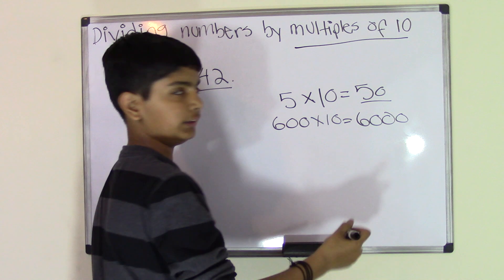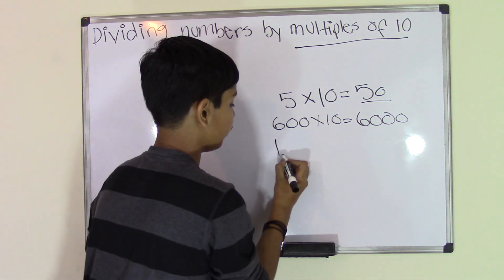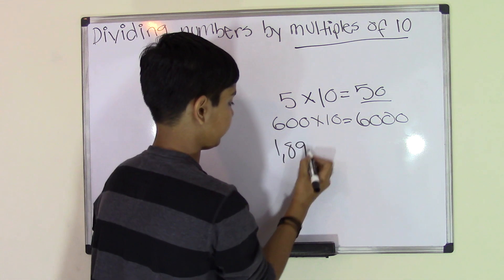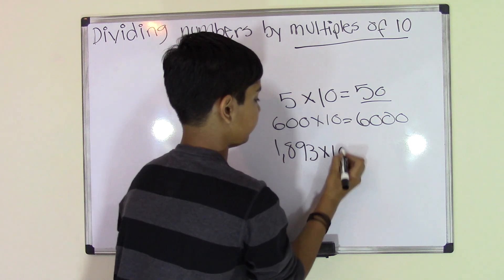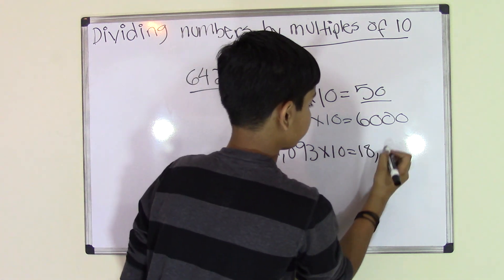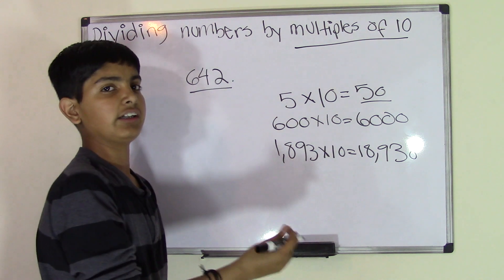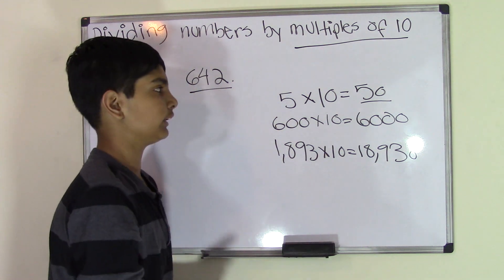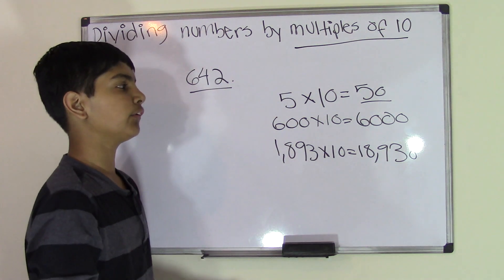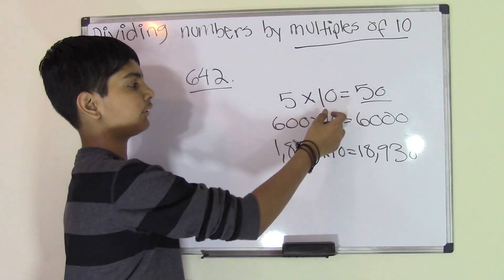We could do 1893 times 10 and get 18,930, and 18,930 will still be a multiple of 10. But since you're in fifth grade, we'll mostly concentrate on numbers in the tens place value.